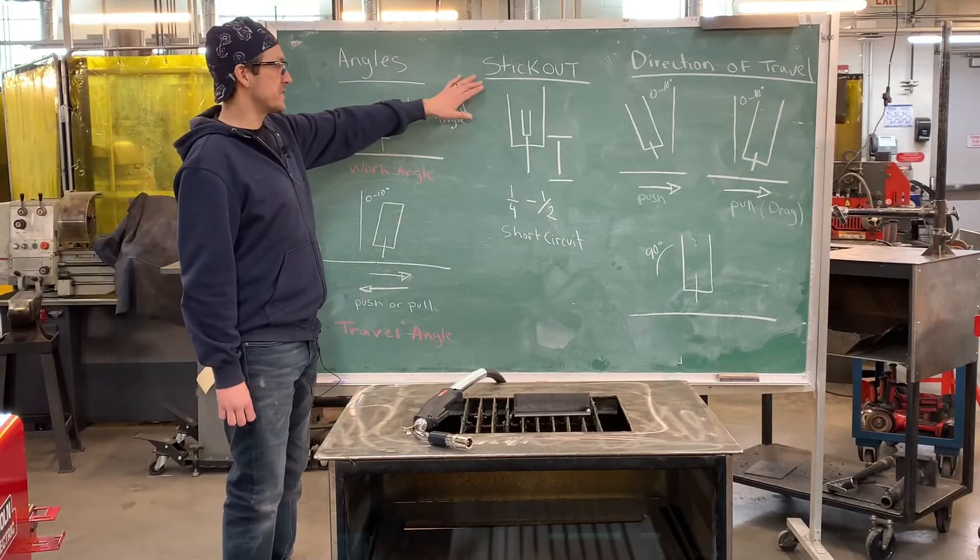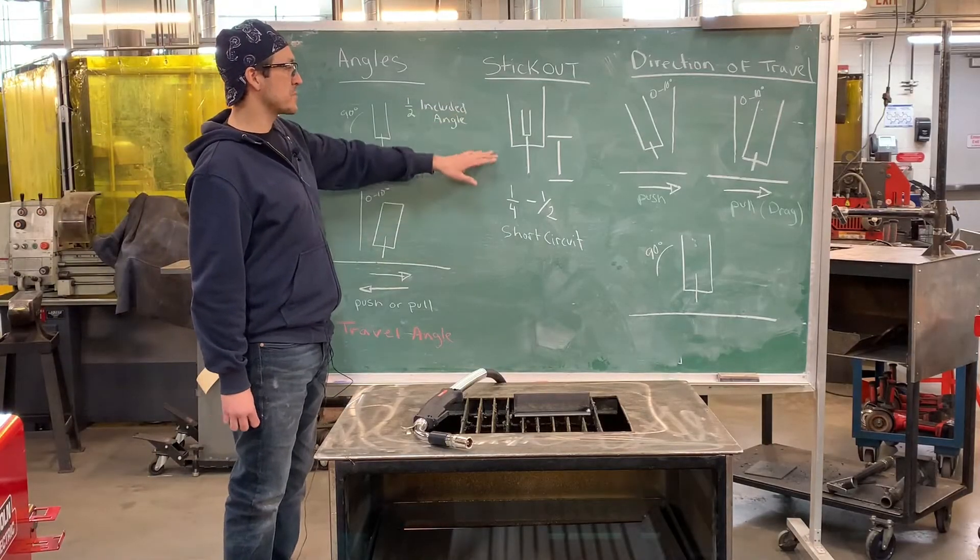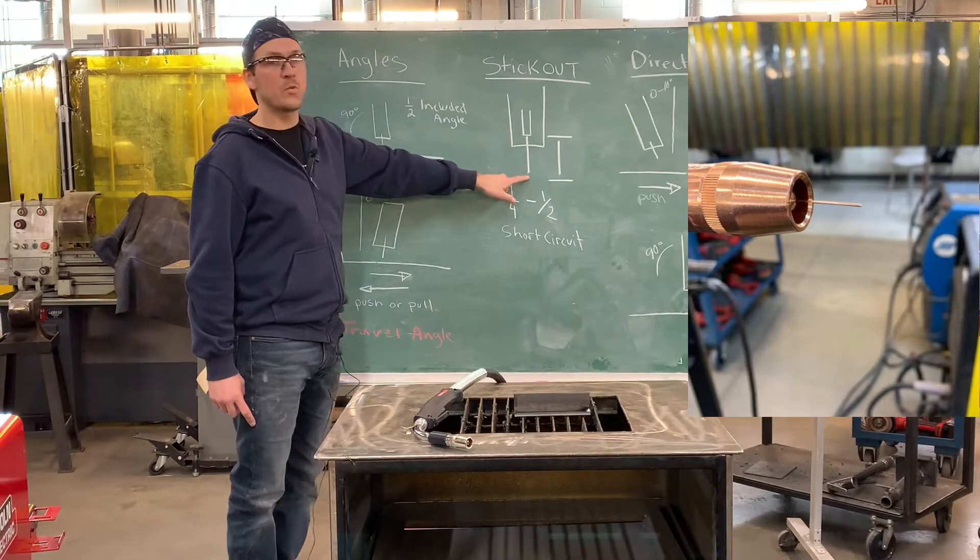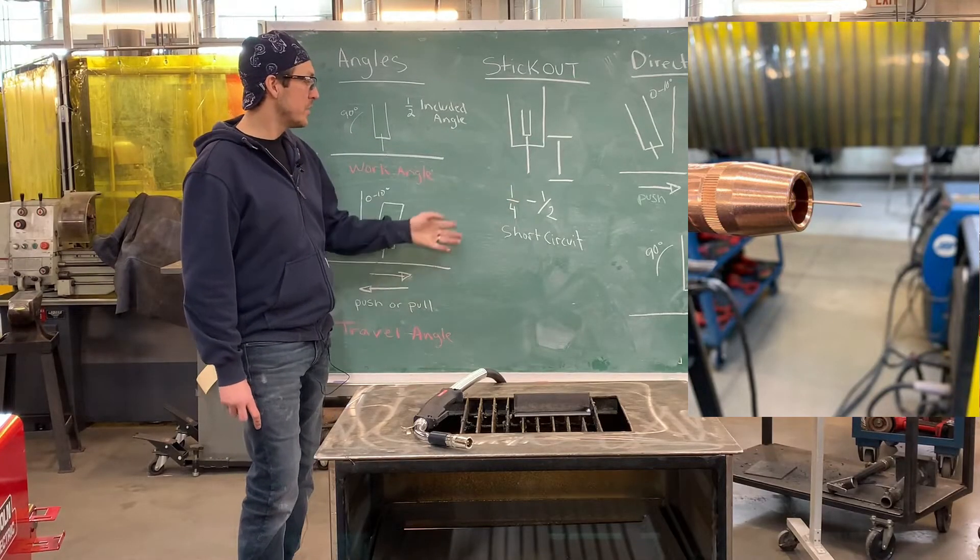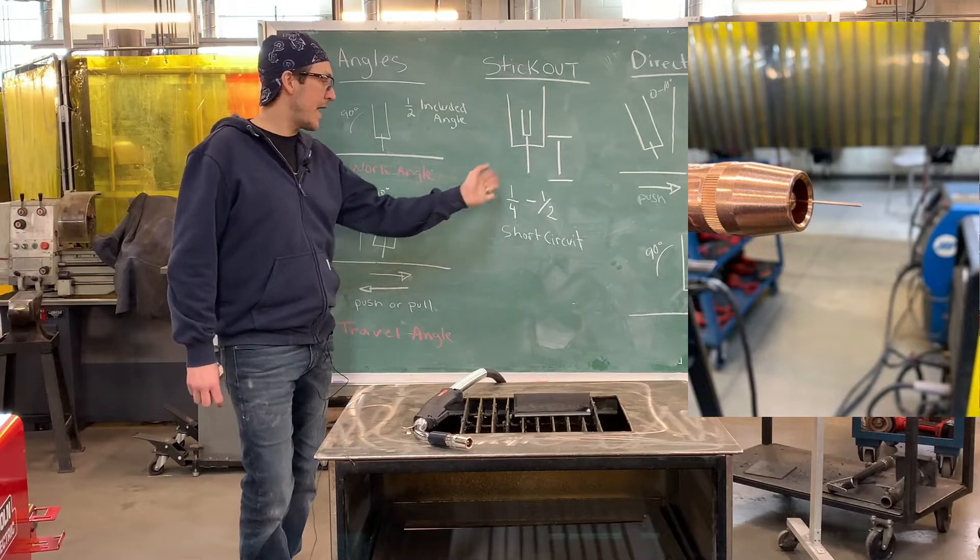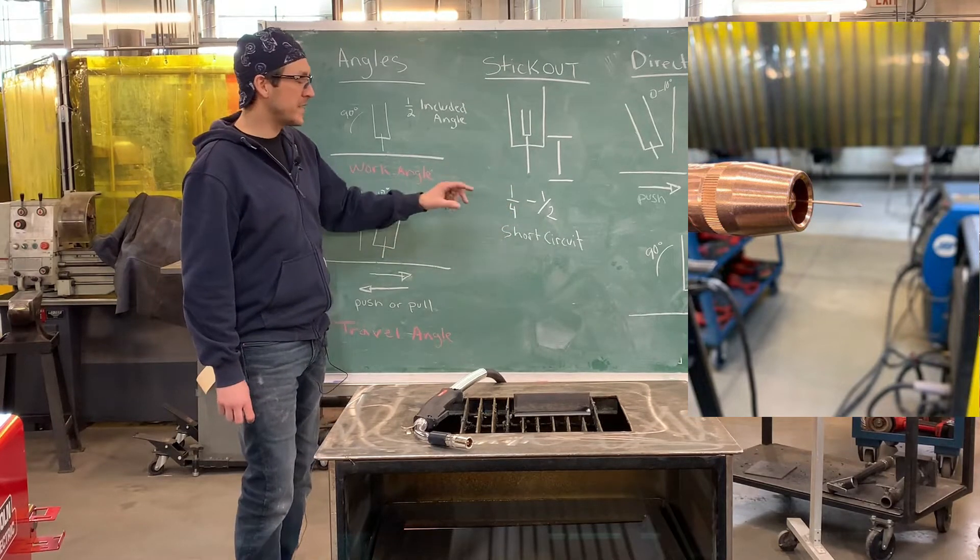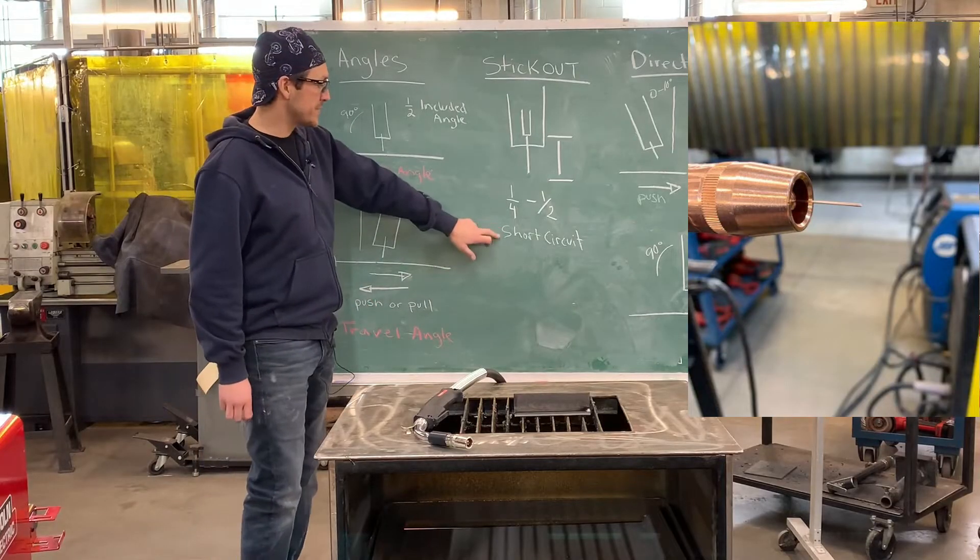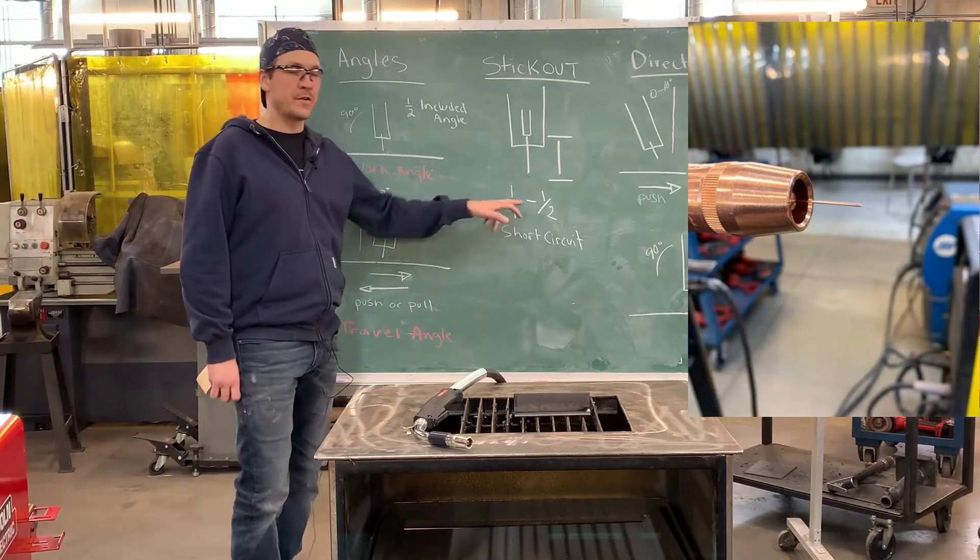The next variable is your stick out—this is a measurement from the end of your contact tip to the end of the wire. We want to be within a quarter to half an inch. Depending on the wire size and the type of transfer mode, this will determine how far that stick out is.